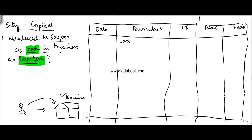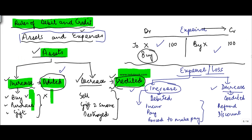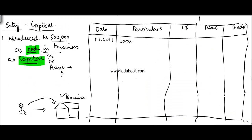Let's take 1/1/2011 as the consistent date. There is an account which is cash — cash is an asset account. From the business perspective, there is an increase in cash, and we saw earlier that the rule is: increase in an asset is debited.